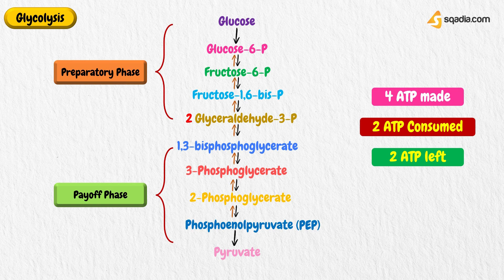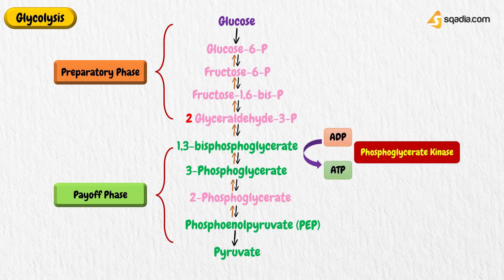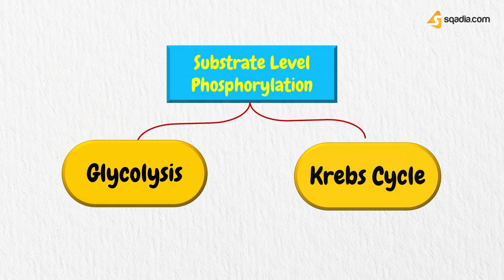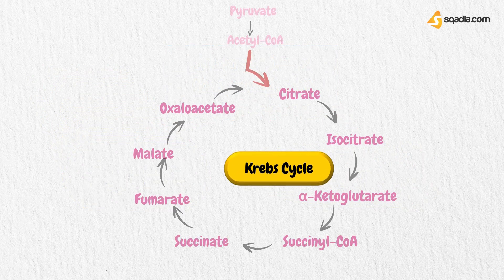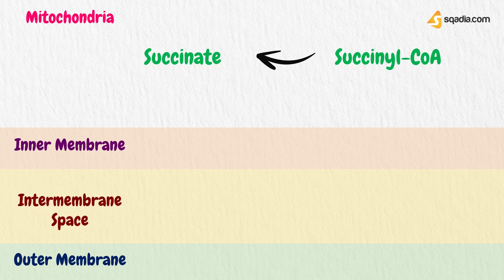ATP is formed by the phosphoglycerate kinase and pyruvate kinase glycolytic reactions. Every Krebs cycle produces two ATP and six NADH for every glucose molecule entering glycolysis. The Krebs cycle takes place inside the mitochondria. The reaction is catalyzed by succinyl coenzyme A-synthetase, which produces guanosine triphosphate (GTP), which is structurally like ATP. The enzyme nucleoside diphosphate kinase catalyzes the conversion of GTP to ATP in the intermembrane space.